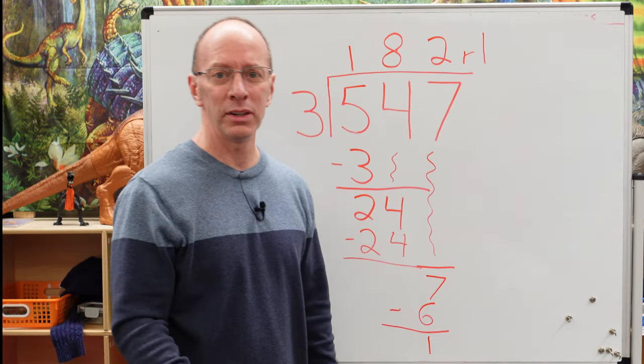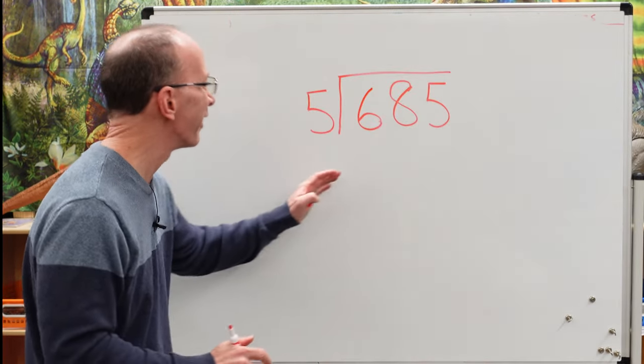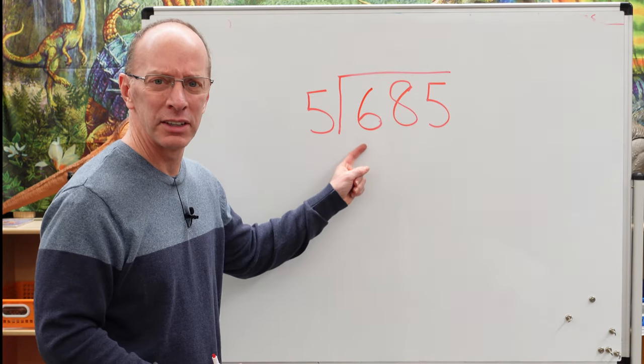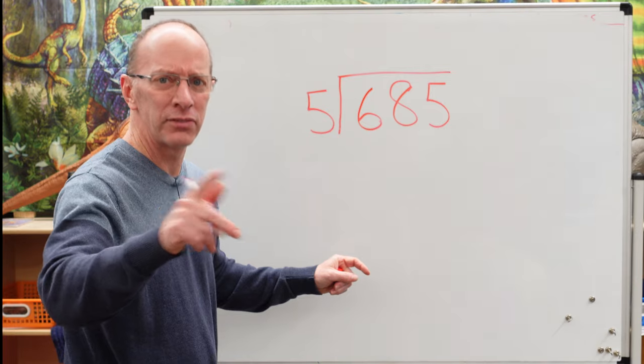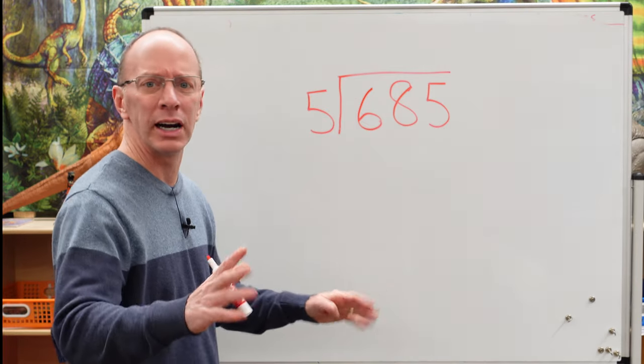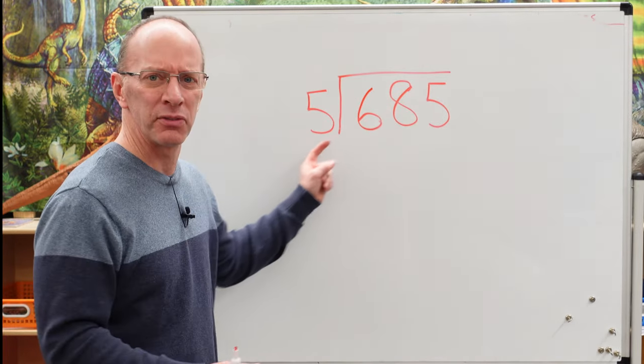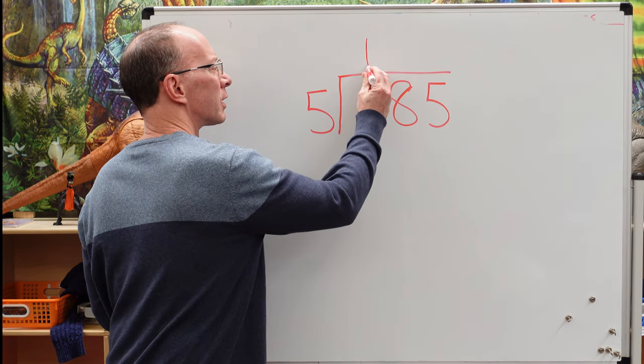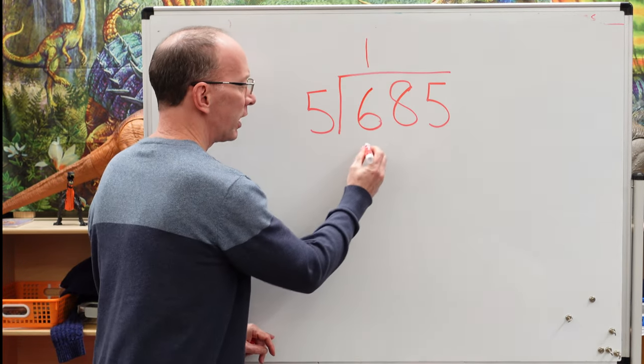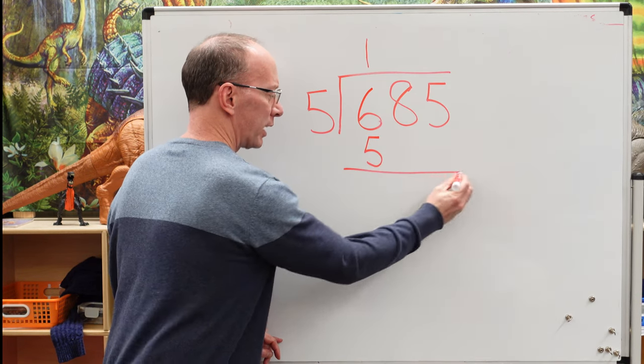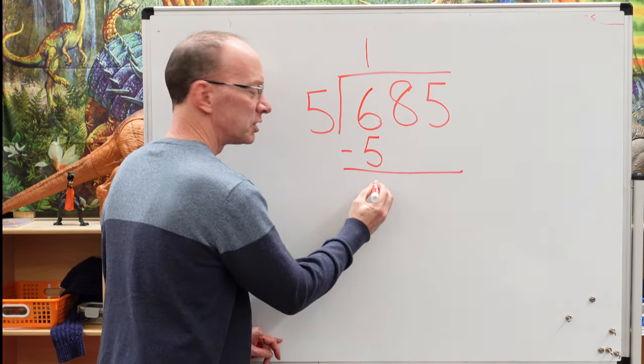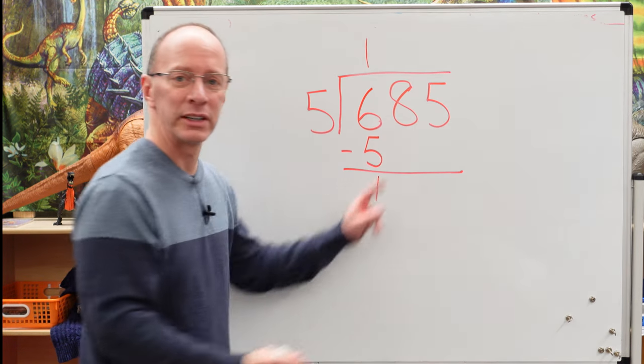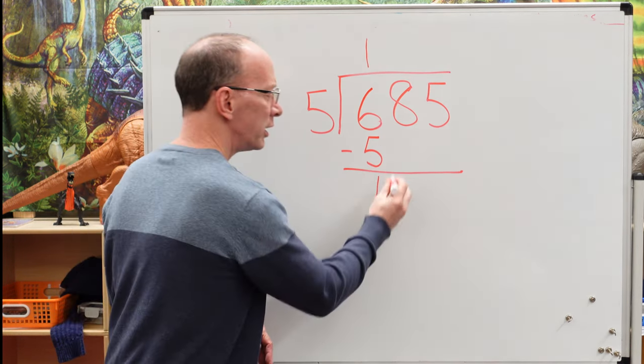Hey, you ready to do another one? Let's do it. Welcome back. Let's get started on this one. How many times can I put 5 into 6? 5 times 1 is 5. 5 times 2 is 10. Too high. Bring it down. Let's just put 5 into 6 one time. So I put a 1 right here. And then 1 times 5 is 5. Put the 5 here. Subtract it. 6 minus 5 equals 1. Bring that 8 down.